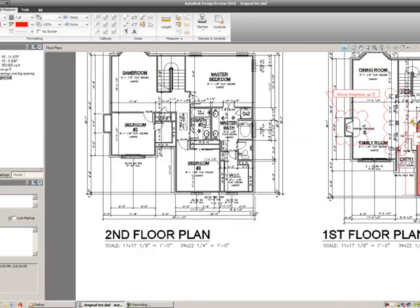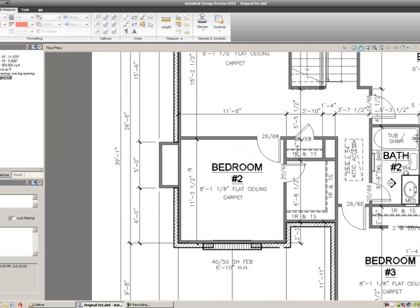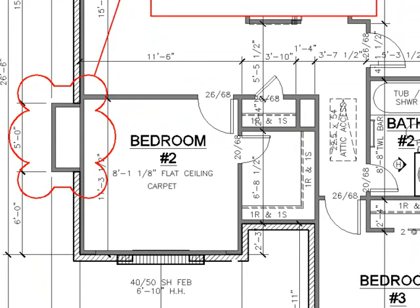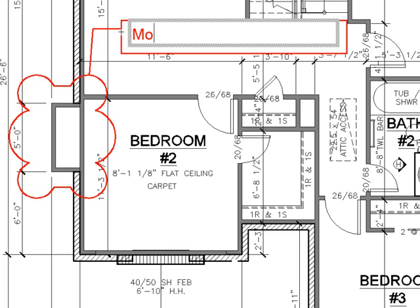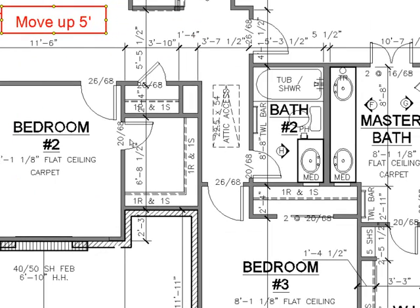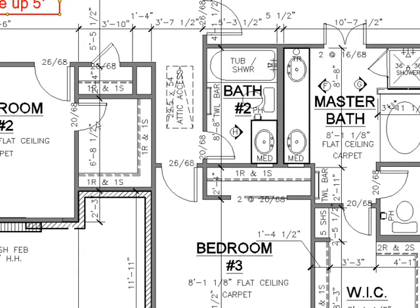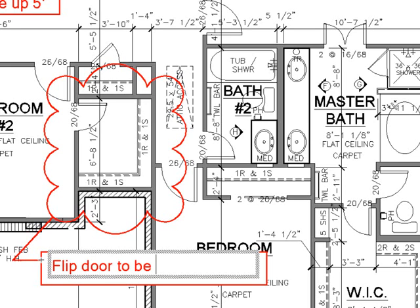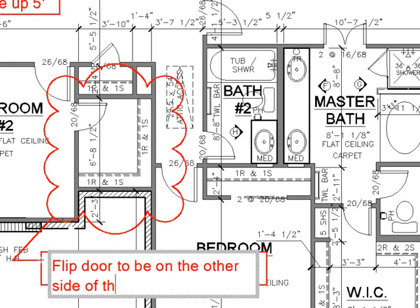If I move over to my second floor plan, I can be consistent with my floor plan. I'll move this chase up, so I'll just rectangle around this wall and tell it to move up by feet, just like I did on my first floor. And maybe I want to flip the door over here — I'll hold down my left click, select this wall, and say 'Flip this door to the other side of the closet.'